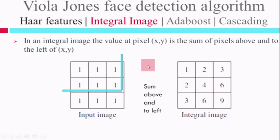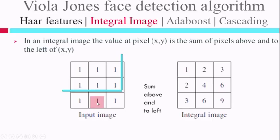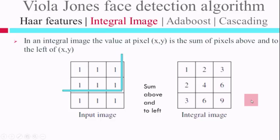Let me explain what integral image is. For the given input image, to calculate the value at a pixel in the integral image, just sum up everything from the top and to the left. For example, summing all pixel values above and to the left gives 6, or 2, or 6, depending on the pixel. Integral image means: to get the new pixel value, just sum up all the pixel values falling in the left and top region. The advantage of converting an image to integral image format will now become clear.